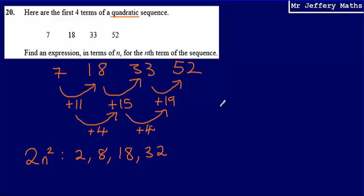Now, what I'm going to do is compare the sequence that I've got, 7, 18, 33, and 52, with this 2n² sequence. Because I know that my answer is going to be 2n² something.